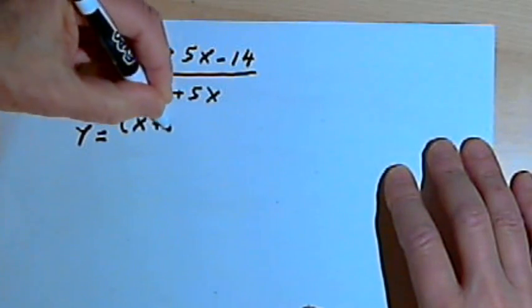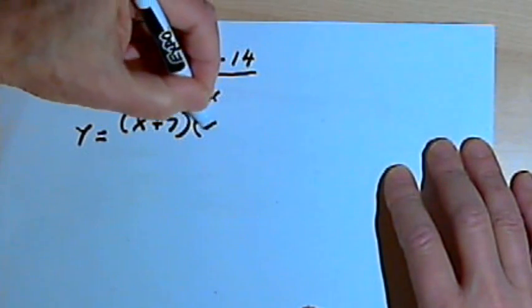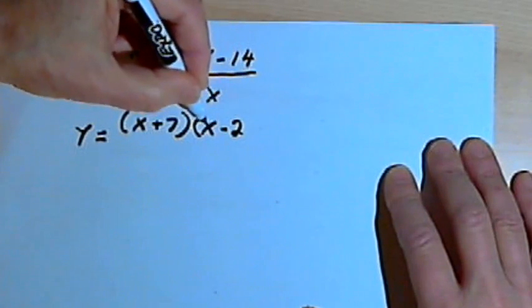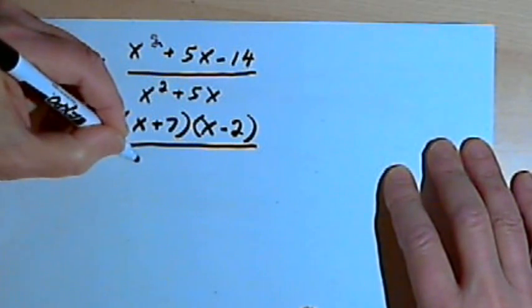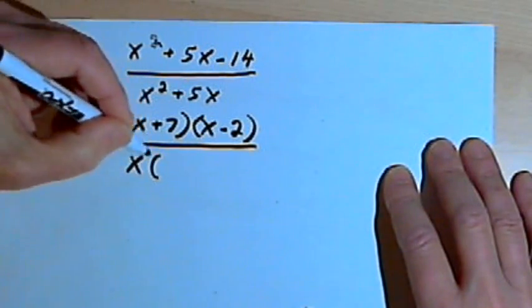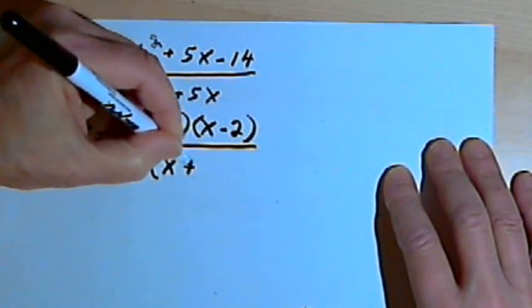x plus 7 times x minus 2. In the denominator, I can factor an x out of that expression, so I'll have x times x plus 5.